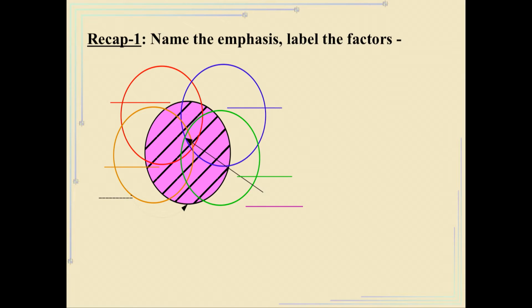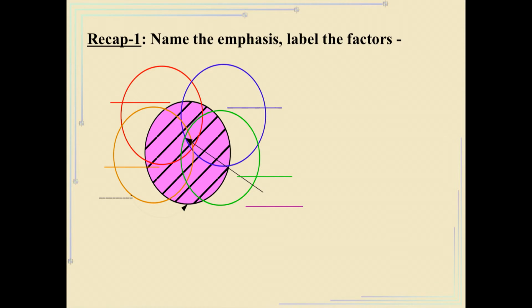Let's have a look at a graphical representation of the DECL. Here we see four interlocking circles — a Venn diagram. Each of these represents some of the factors we've been talking about. Take a minute to try to label the factors in DECL, and speculate on what the nexus where all of the circles meet might represent.